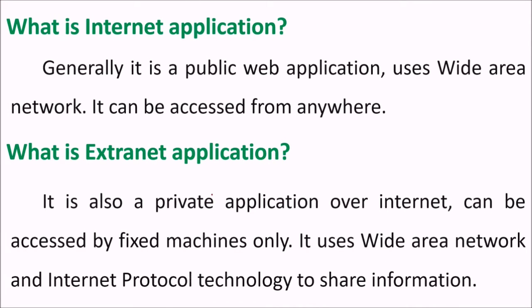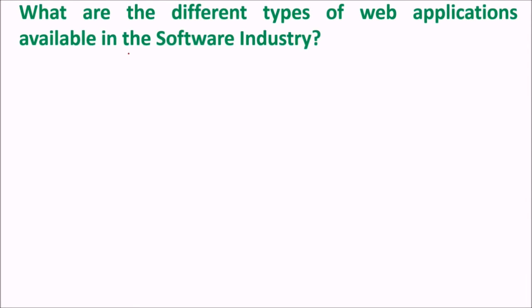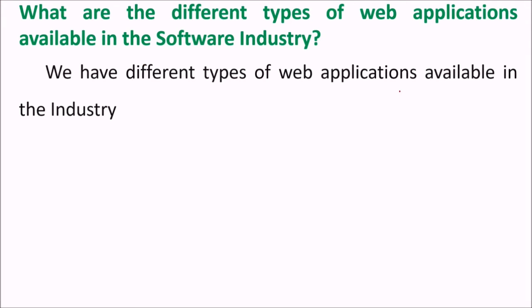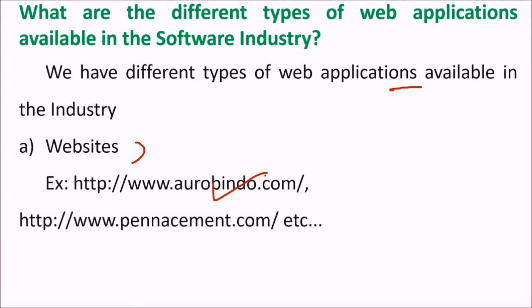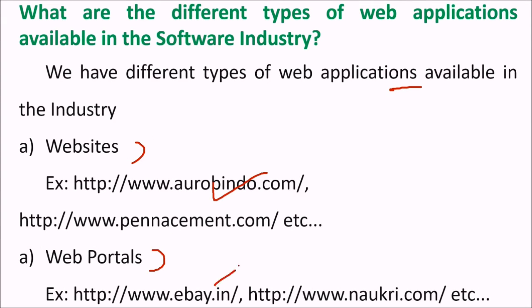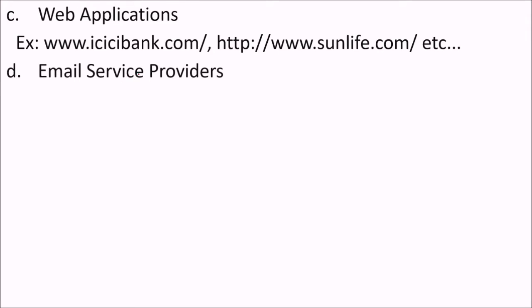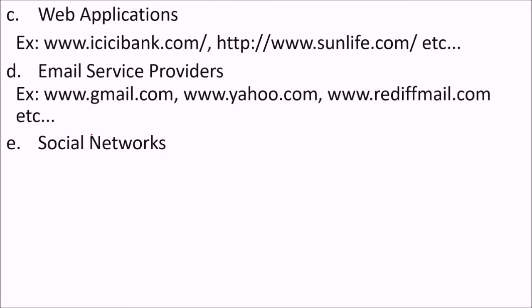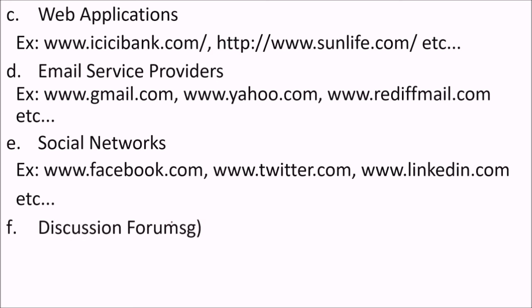An extranet application is a private application over the internet, accessible by authorized machines only. It uses wide area network and internet protocol technology to share information. There are different types of web applications available in the software industry: websites, web portals, email services or email providers, social networks, discussion forums, and classified websites.